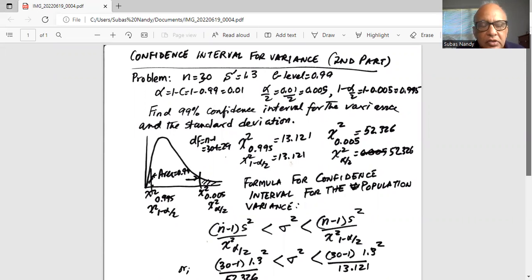Our confidence interval was 99%, level of significance is 1 minus 0.99 which is 0.01, which is divided equally into two tails. 0.01 divided by 2 is 0.005, so 0.005 in the left tail.